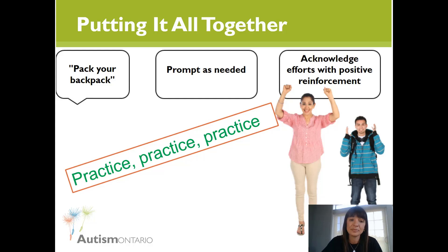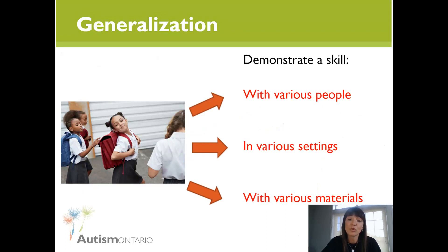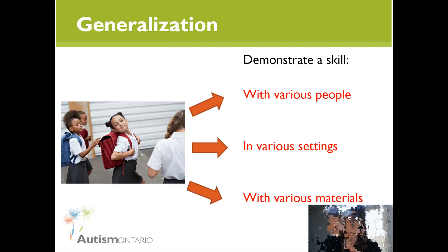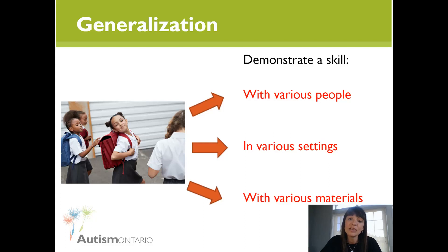Generalization is the ability for a child to perform a skill under different conditions. For packing a backpack, this means responding to different people (not just caregivers at home, but also a teacher at school), practicing in various settings (home to school, school to home, the pool, a sleepover), and with various materials and contents. Keep in mind the end goal, and do what you can to help your child get there — generalization is what we need to see before we consider a skill mastered.